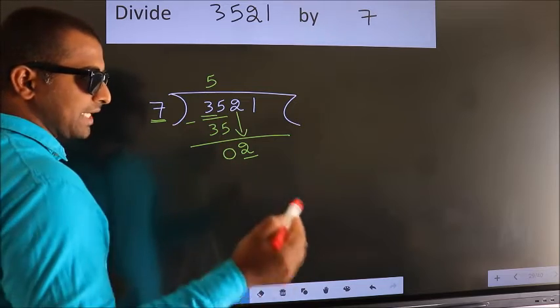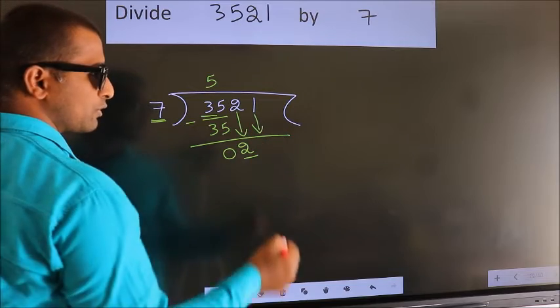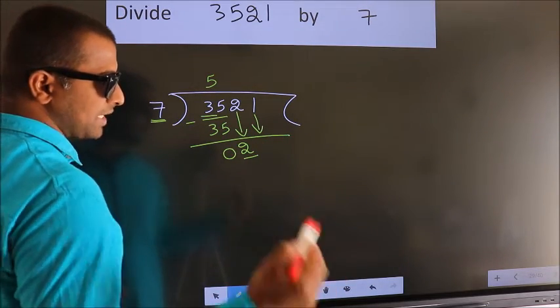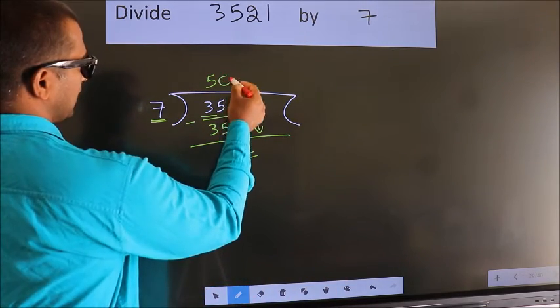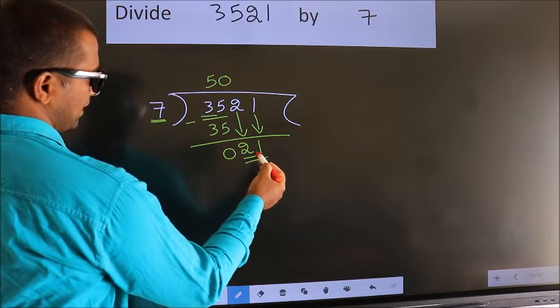So, we should bring down the second number. And the rule to bring down second number is, put 0 here. Then only we can bring down this number. So, 21.